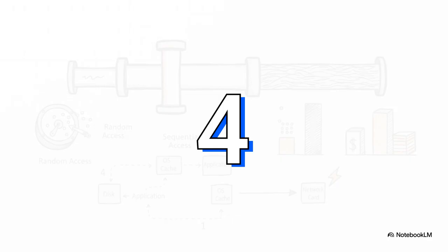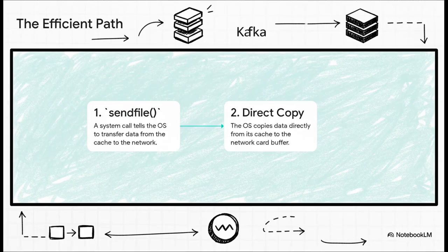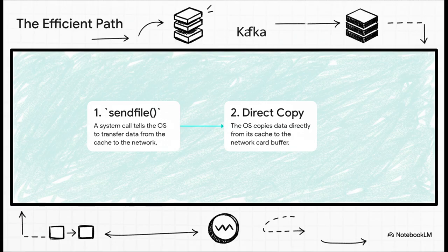Every single one of those steps burns precious CPU cycles and memory bandwidth. It's just incredibly wasteful, especially when you're doing it millions of times a second. Now, check out how Kafka does it with zero copy. It's so much more elegant. The Kafka application makes a single, simple request to the operating system called send file. This one command basically says, Hey OS, you see that data in your cache? Just send it directly to the network card for me. We go from four copies down to one direct transfer.